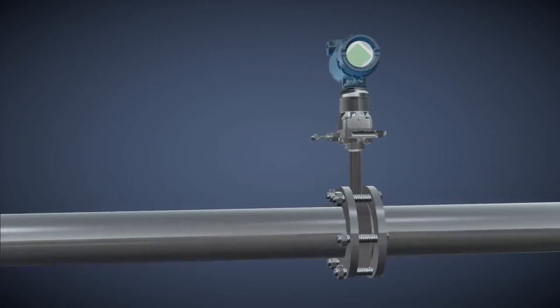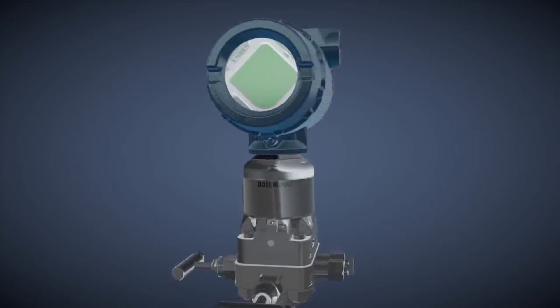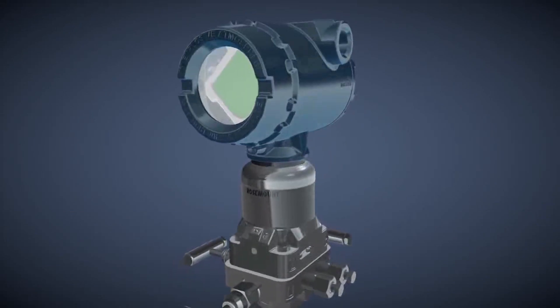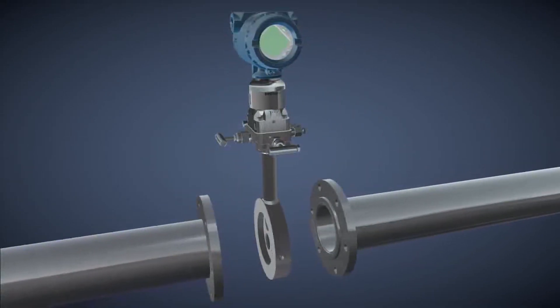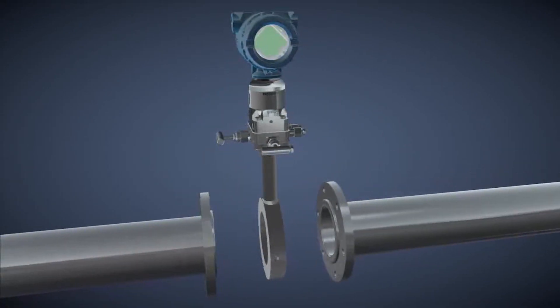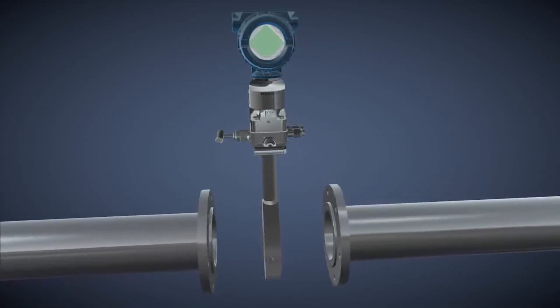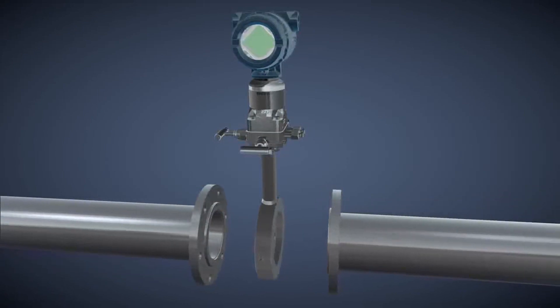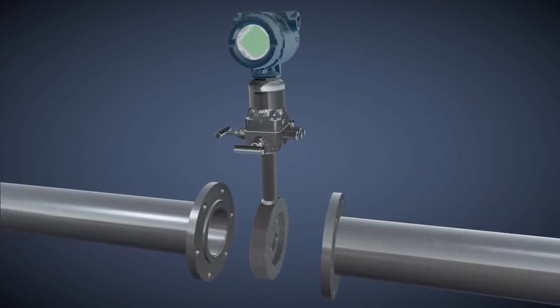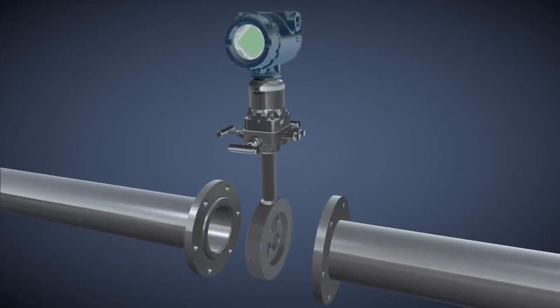The secondary element, or transmitter, takes measurements from the primary element and converts them into useful quantitative values, and transmits those values to a control system.